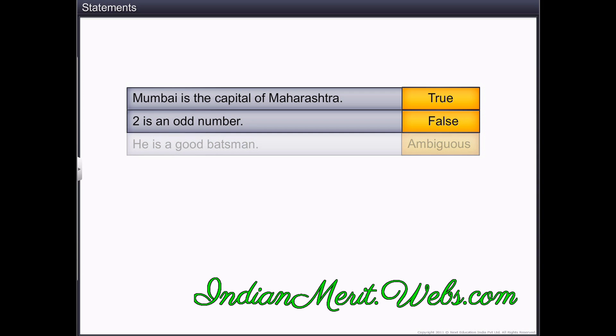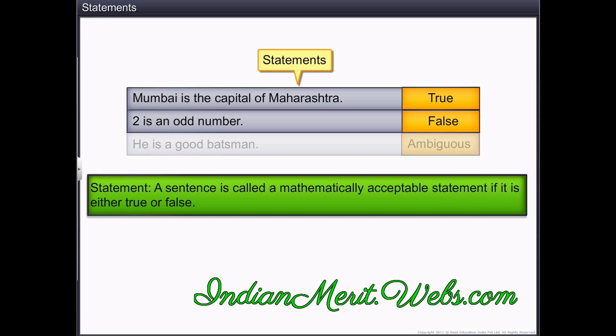The first two sentences have truth values and there is no ambiguity. Mathematically, such sentences are called statements. A sentence is called a mathematically acceptable statement if it is either true or false.